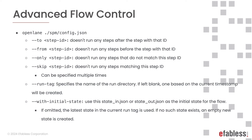OpenLane 2 offers a very powerful command line interface. Options include: --to, which doesn't run any steps after a step with that specific ID; --from, which doesn't run any steps before that step ID; --only, which doesn't run any steps that do not match the step ID; while --skip does the inverse. Finally, --run-tag specifies the name of the run directory under runs — if left blank it creates a new directory with the current timestamp, but if specified it will load the previous run. This is complemented by --with-initial-state, which allows you to explicitly specify the initial state.